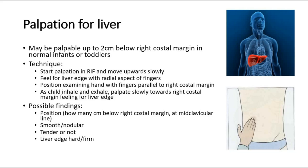As noted, a normal liver may be palpable up to 2 cm below the right costal margin, so more than 2 cm may suggest hepatomegaly. Besides position, describe whether the liver is smooth or nodular, whether it is tender, and whether the liver edge is hard or firm.